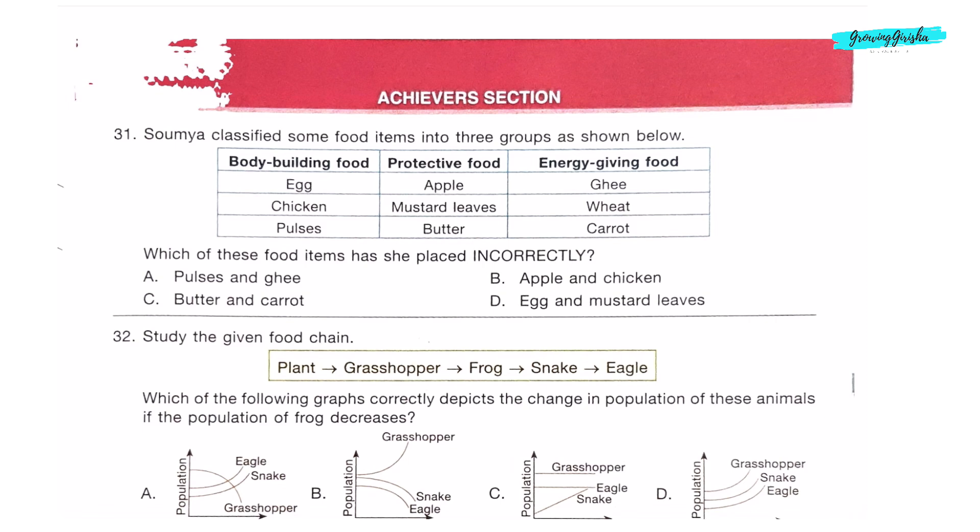Achievers section, Question 31: Soumya classified some food items into three groups. Which of these food items has she placed incorrectly? Bodybuilding foods give us protein: eggs, chicken, pulses. Protective foods are fruits and vegetables: apple, mustard leaves. Butter is an energy giving food, placed incorrectly. Energy giving foods give us energy to work and play: ghee, wheat. Carrot is a protective food. So she has placed butter and carrot incorrectly. Option C is the correct answer.